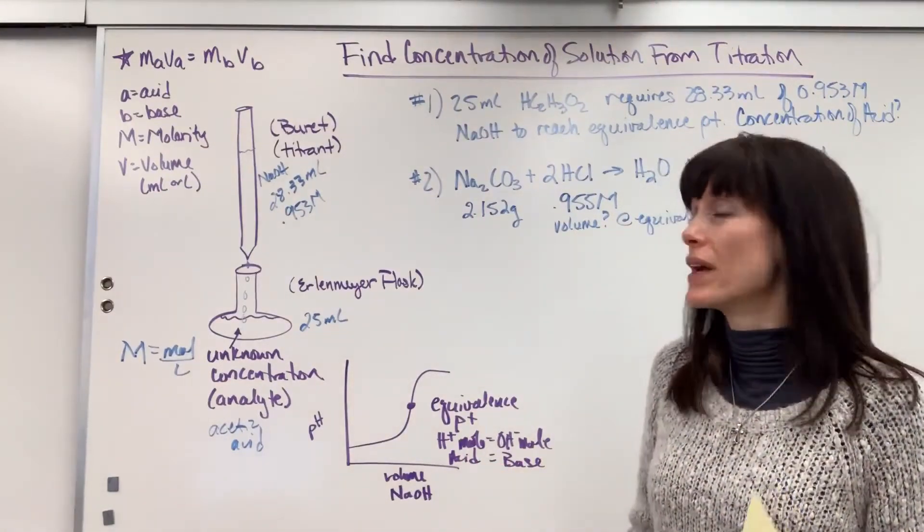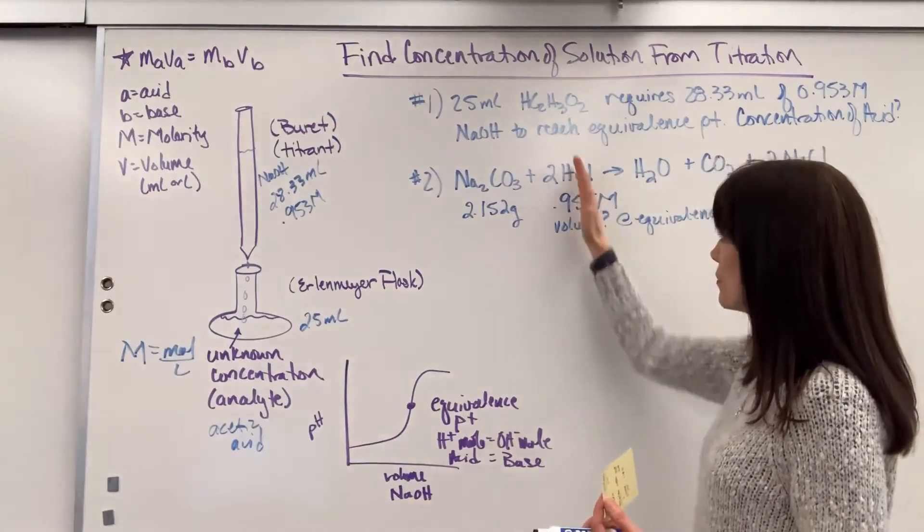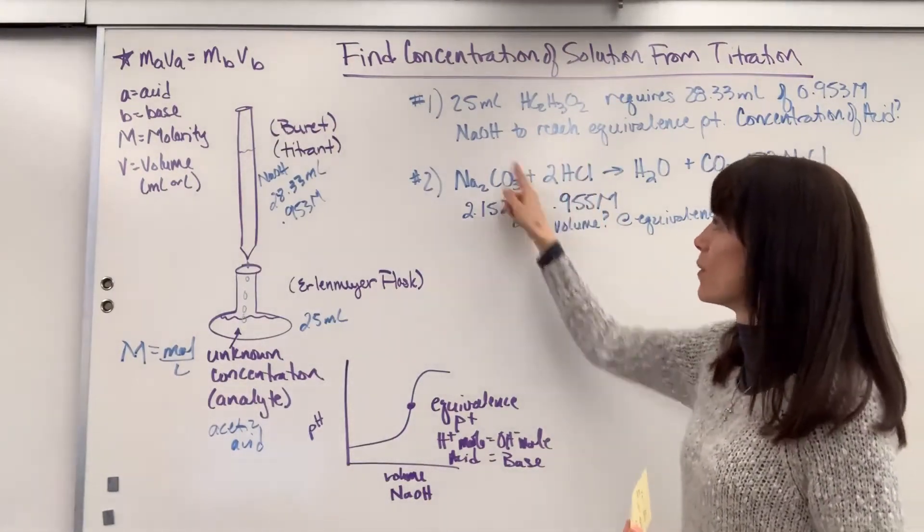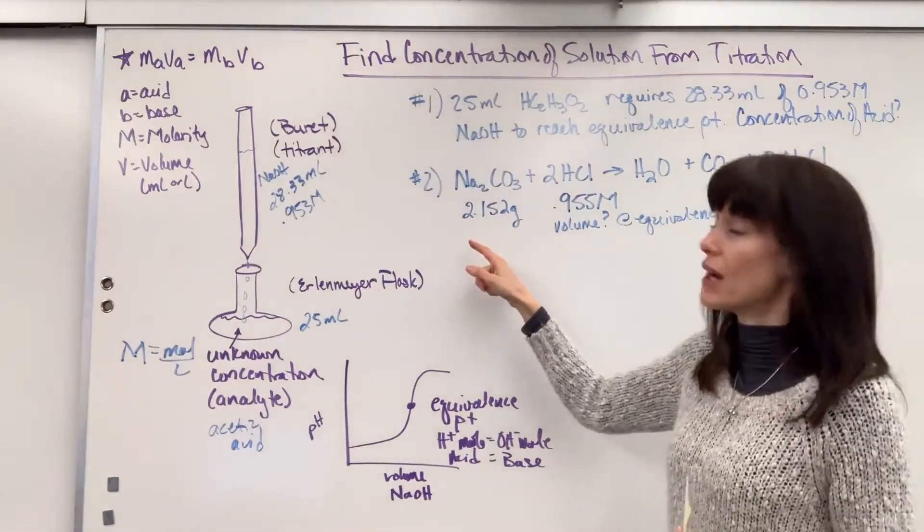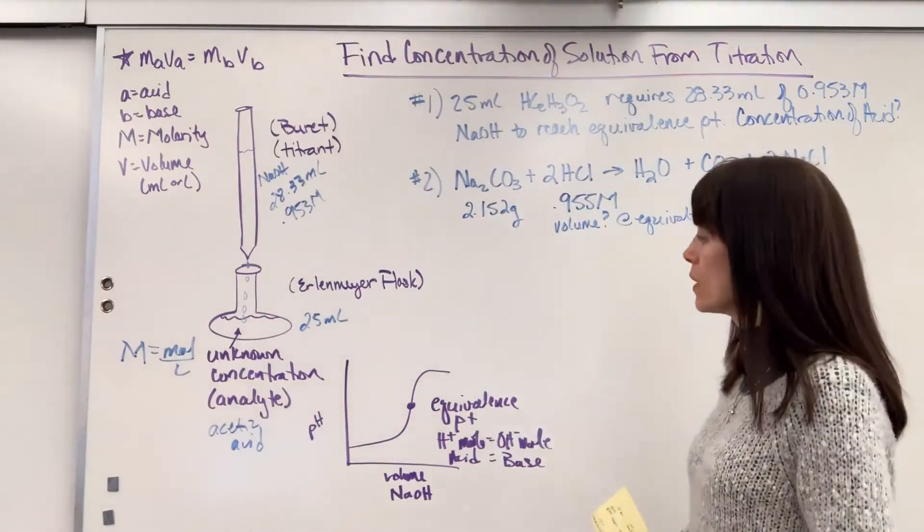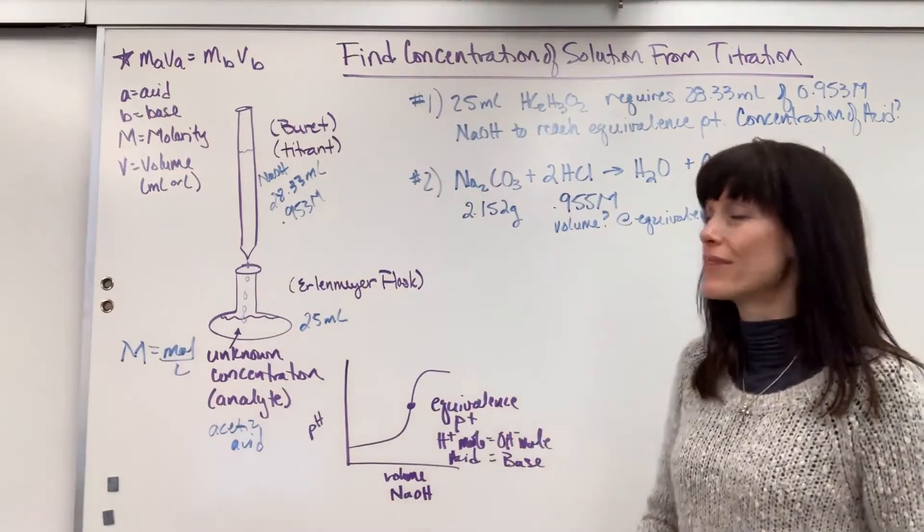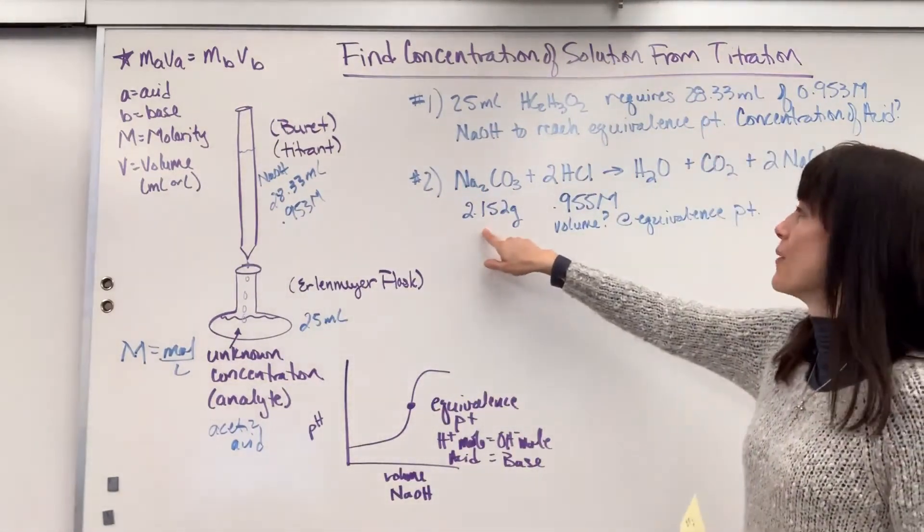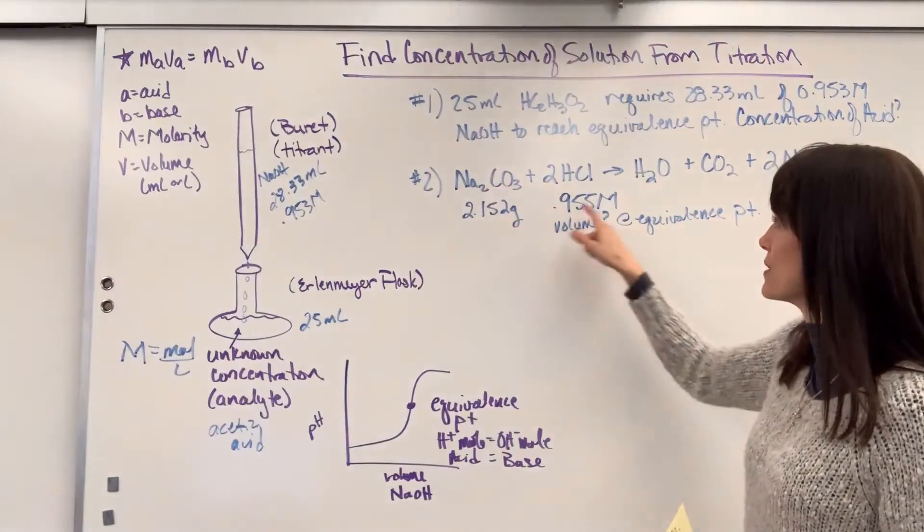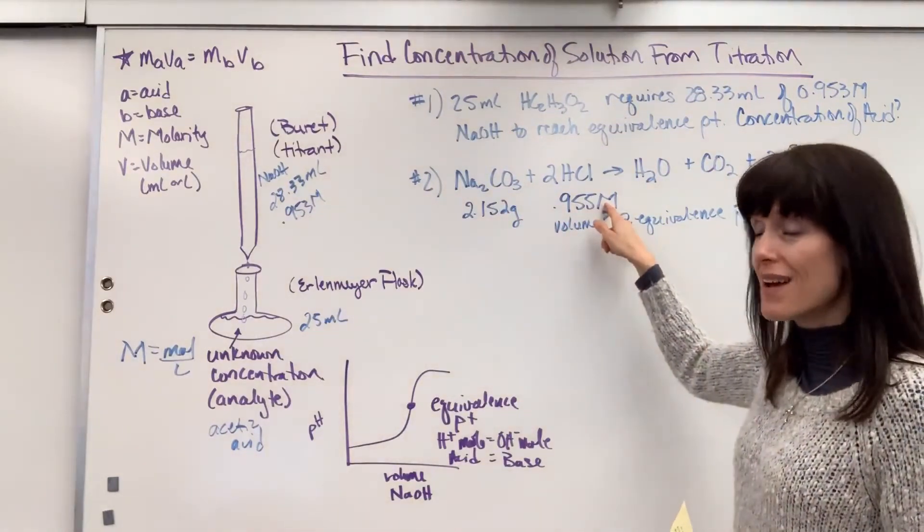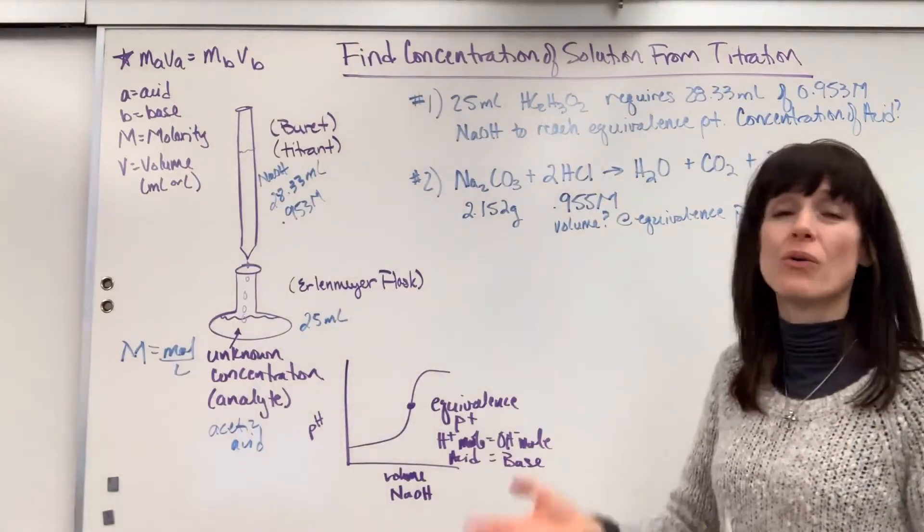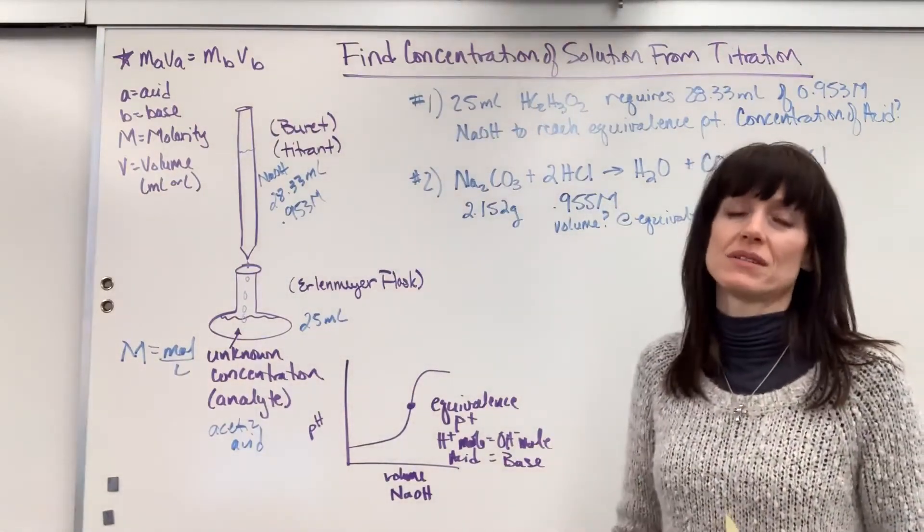Again, it's going to be equivalence point. I want to add just enough of my hydrochloric acid that the moles of that equals the moles of this sodium carbonate. Same principle. We've got to find the moles of this. And once I've got the moles of this, remember molarity, moles per liter? I can cancel out moles, and that will give me my volume. I'm always looking at units.